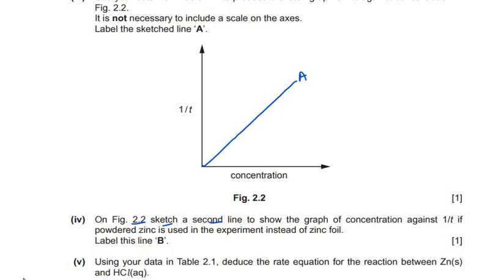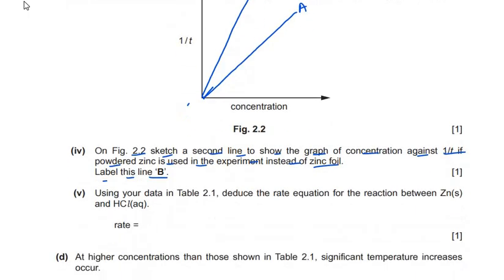On figure 2.2, sketch a second line to show the graph if powdered zinc is used instead of zinc foil, and label this line B. If powdered zinc is used the rate of reaction is faster, so the time taken is less and 1/T is bigger. The rate increases and the gradient is steeper, so line B is drawn above line A with a higher gradient.